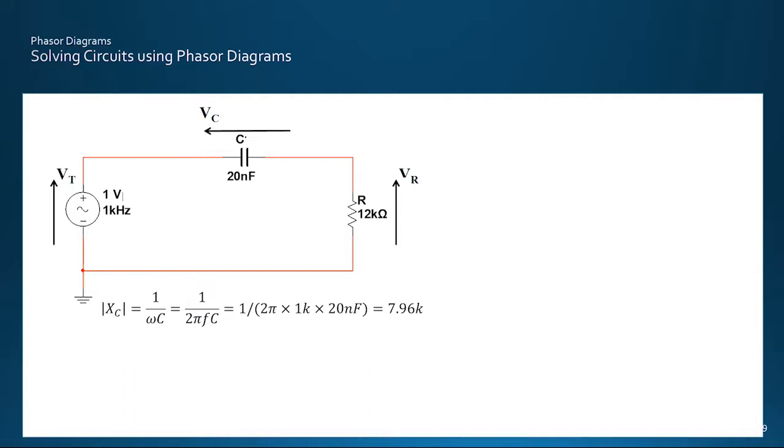So for the capacitor here, we can use the previous formula for capacitive reactants, being 1 over omega c, where omega, the frequency in rads per second, is 2pi times the frequency f in hertz, to get a value of 7.96 kilo ohms.